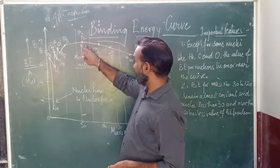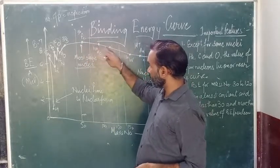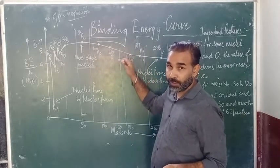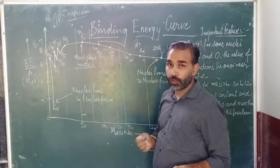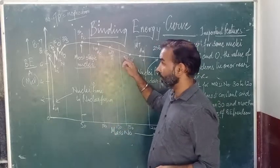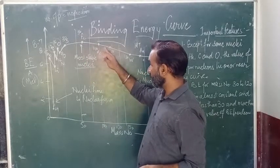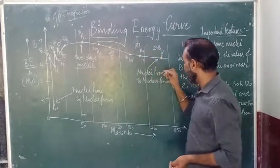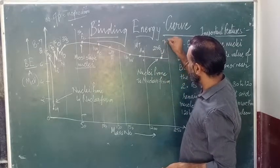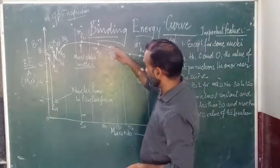After that, gradually on a smooth curve, the value keeps on decreasing with the increase of mass number. The value of binding energy per nucleon gradually decreases with the increase of mass number. Till about mass number 120, it is almost on the same curve, and then it keeps on decreasing and reaches Uranium-235, where it is around 7.6 Mega Electron Volt.